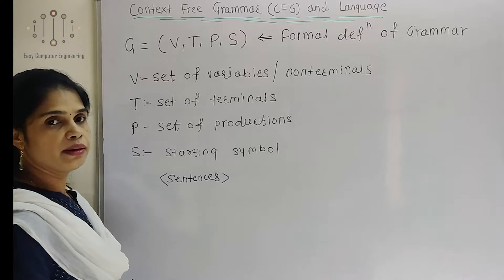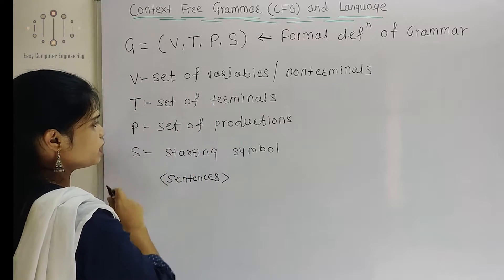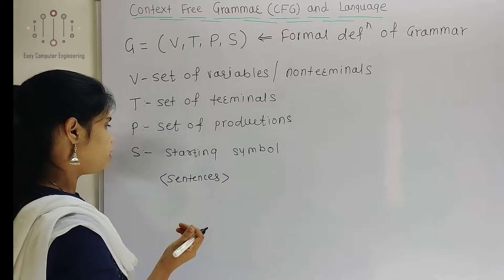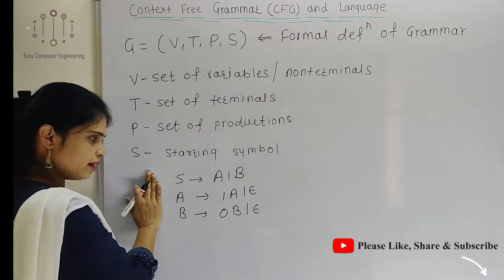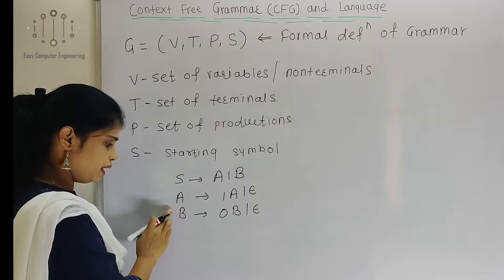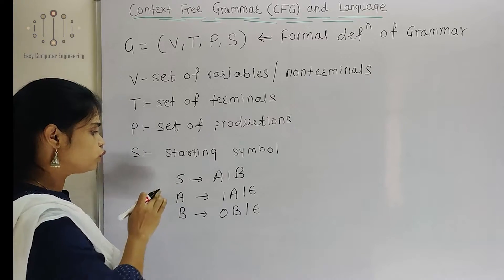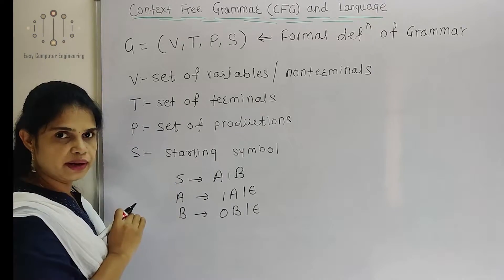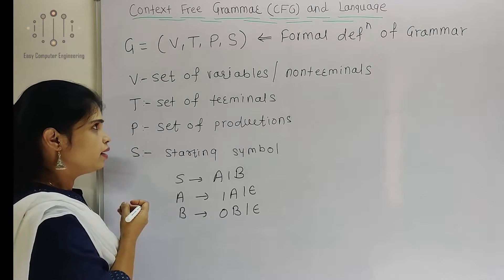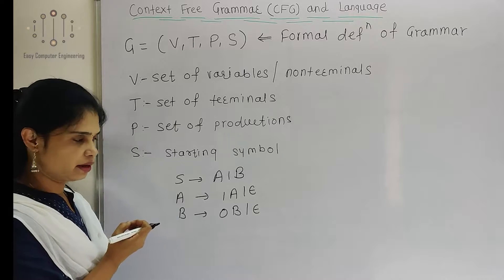V is a set of variables or non-terminals. T is a set of terminals. P is the set of productions. And S is the starting symbol or the special symbol. Here is one example of a grammar. The variables are present on the left side as capital letters like A and B. Mostly, all variables or non-terminals are defined with capital letters, while terminals are represented with small letters.